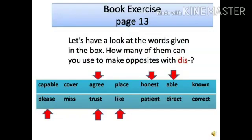Let's see how many words we can make opposites by adding dis before them. First is capable. Discapable is not an opposite word of capable. Discover is not an opposite of cover. But disagree is an opposite of agree.